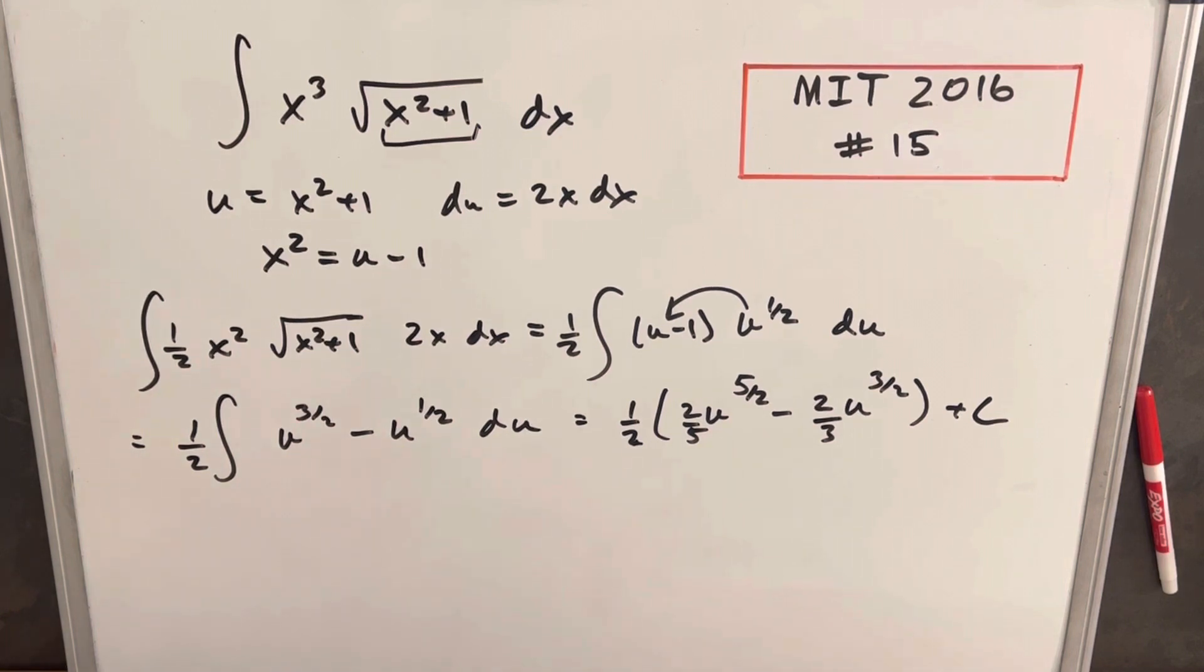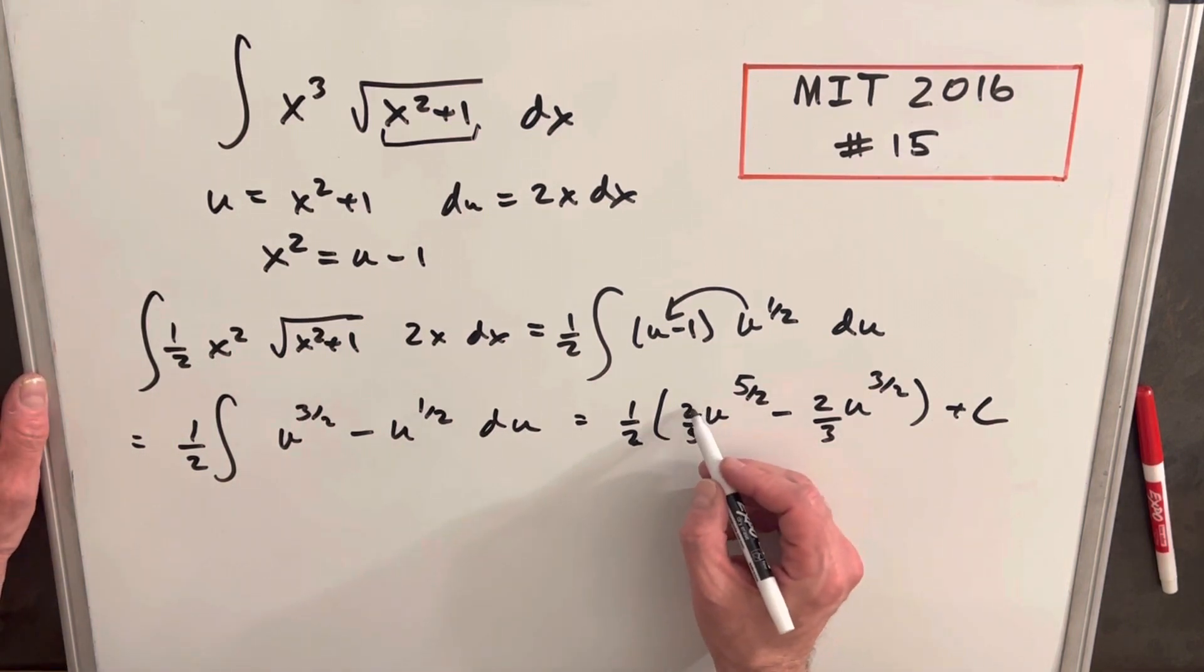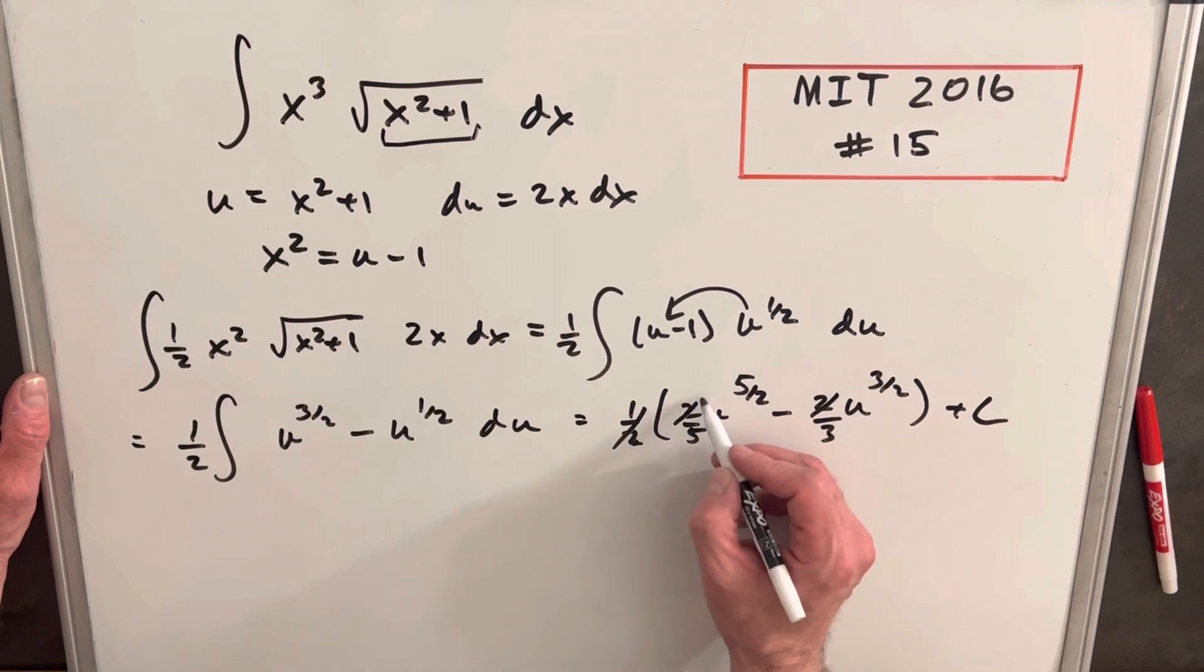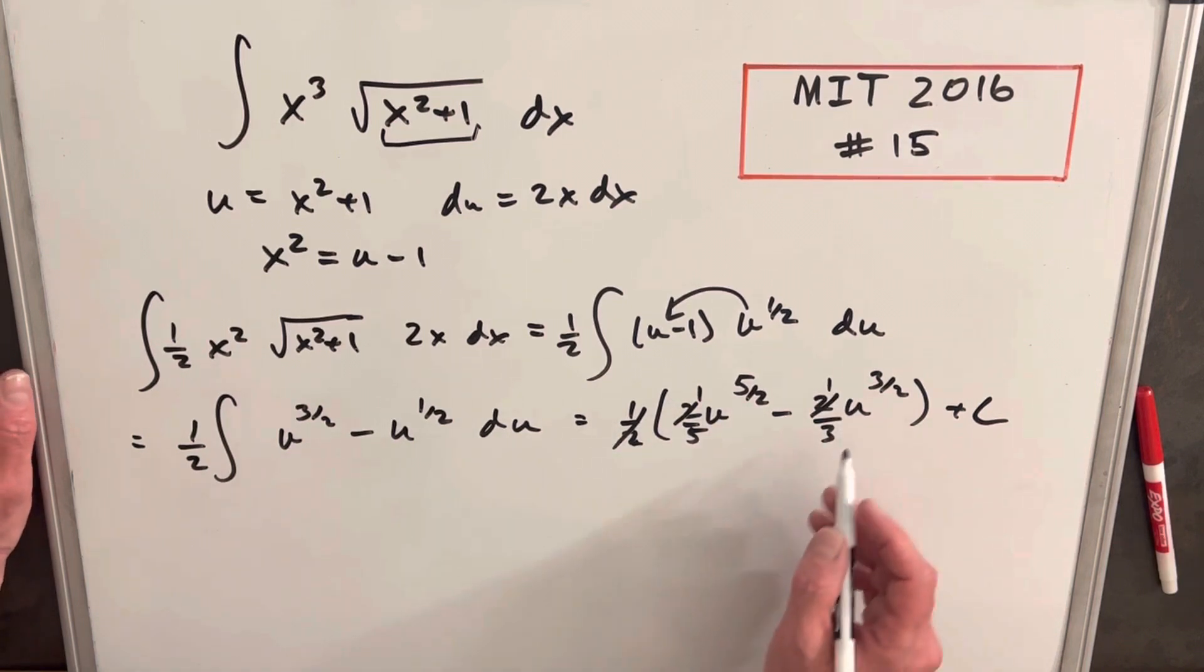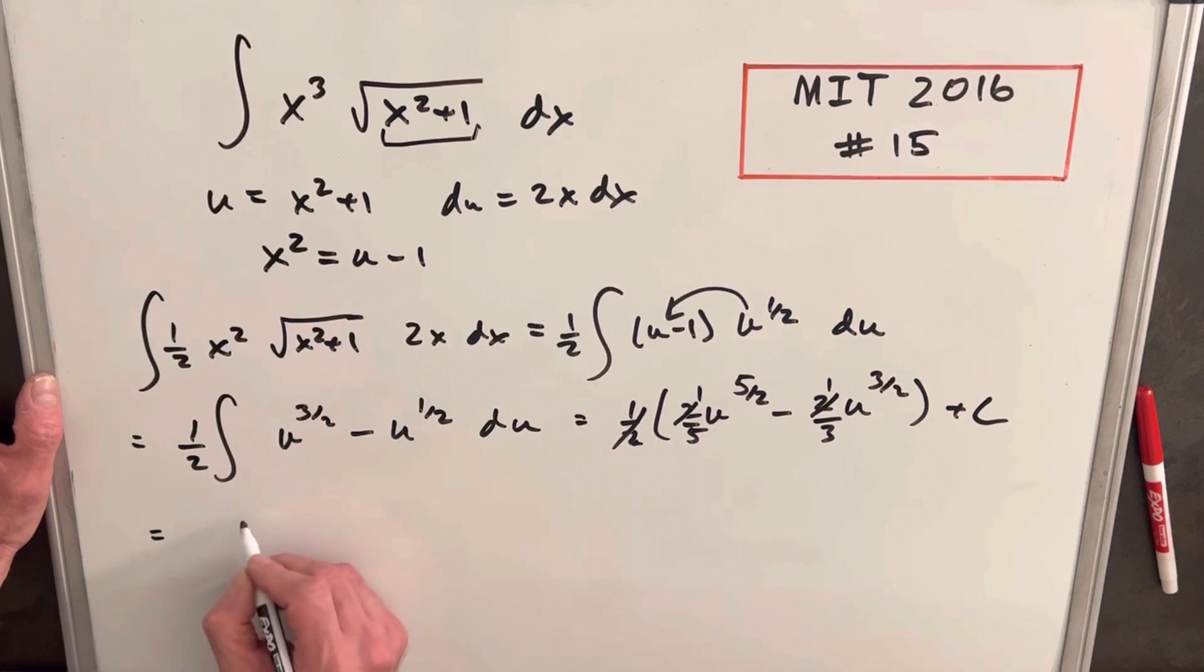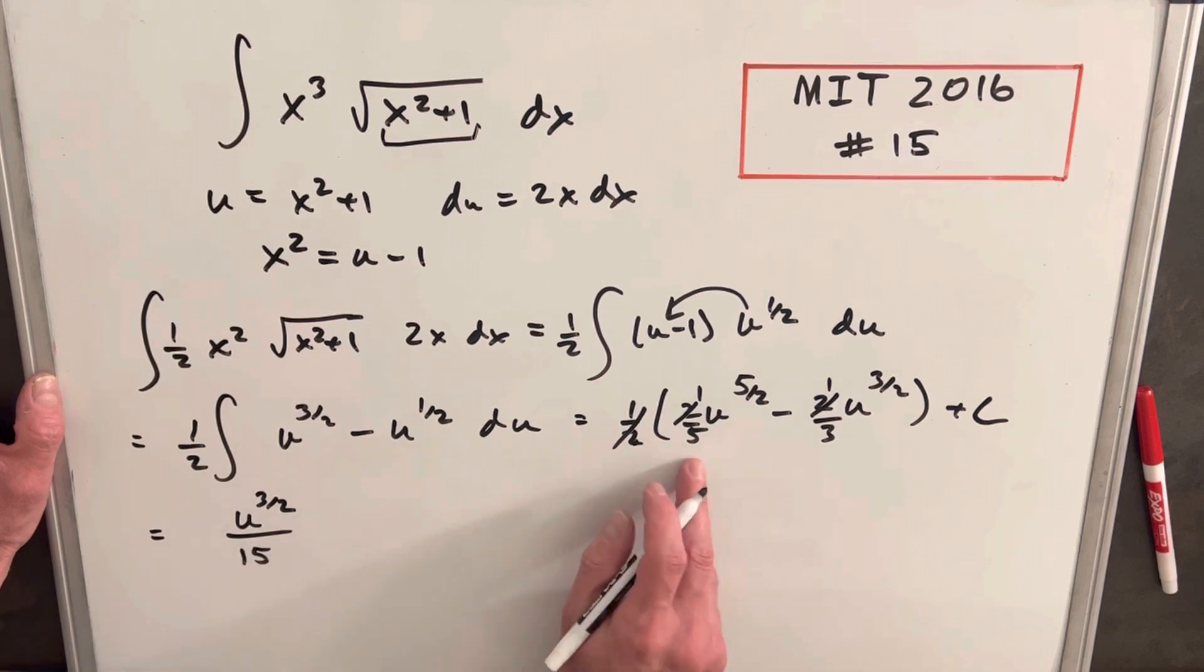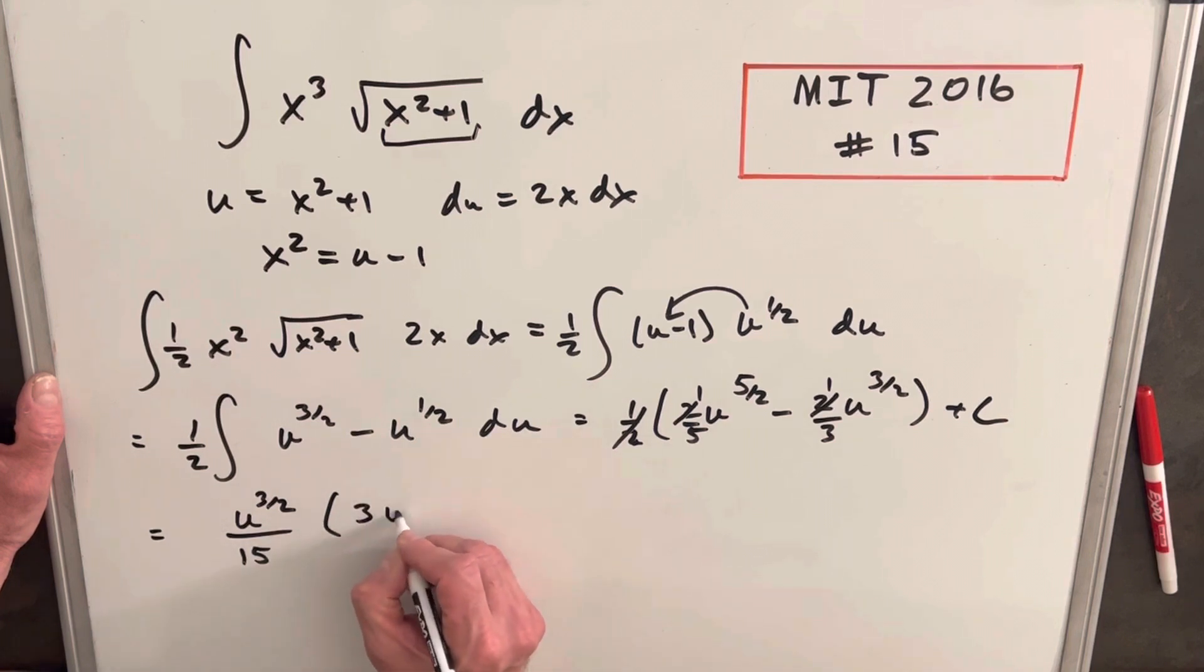And before I back substitute, let's clean this up a little bit. What I'll do is I'll cancel this half with these 2s here. So we'll just have a 1 in the numerator here, and I'm going to factor out a u 3 halves. So we'll have u 3 halves. And what I'm going to do is I'm going to take out a 15 just so we can have integer coefficients on here. So this is going to look like my factor of 15 out of this. We're going to have a 3u here, and we're going to have a minus 5 here.